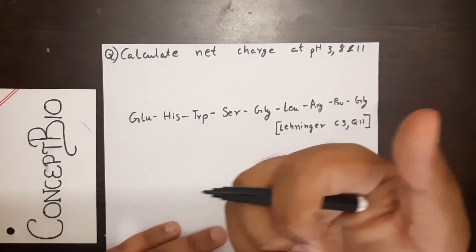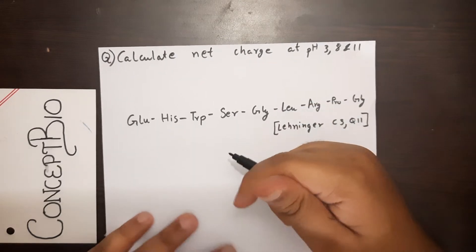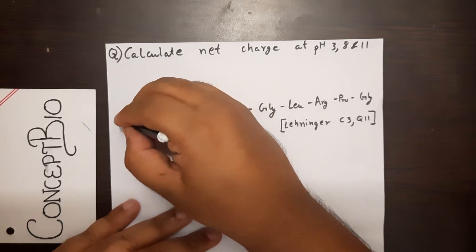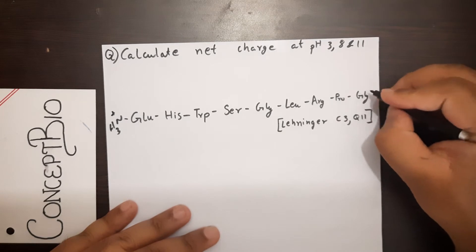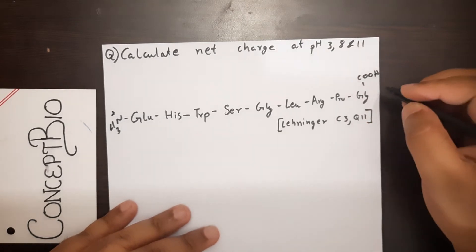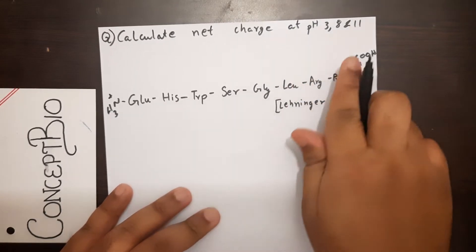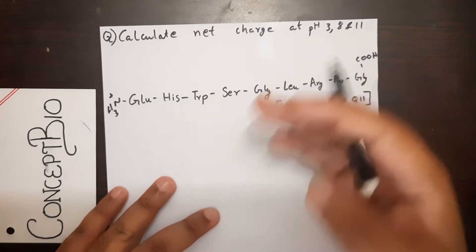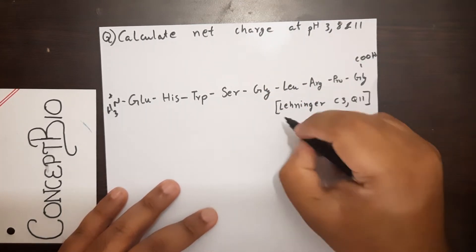From my previous video, as a method for this kind of equation, always start by drawing out your terminal groups — that's NH3+ and COOH. Next, look at which are the triprotic amino acids.